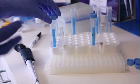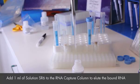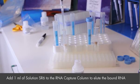Transfer the column to a new 15 ml or 2.2 ml collection tube. Shake solution SR6 to mix and then add 1 ml to the column to elute the bound RNA.